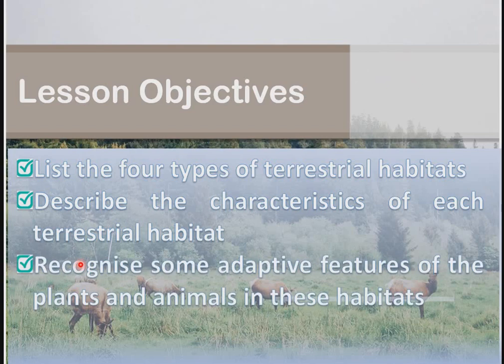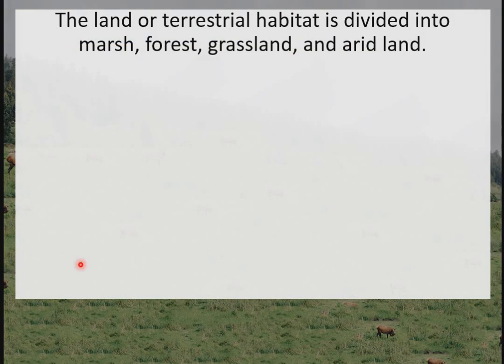You should also be able to recognize some adaptive features of the plants and animals in these habitats. Terrestrial habitats or land are divided into four: the first one is marsh, second one forest, we have grassland, and we have arid land. In our lesson on biotic communities last term we discussed some of these habitats as major biomes in the world, so our lesson will draw more light and make more emphasis on the adaptive features of plants and animals.